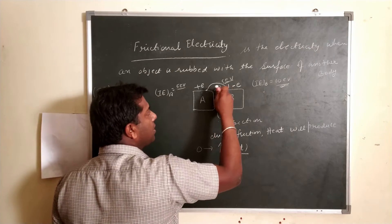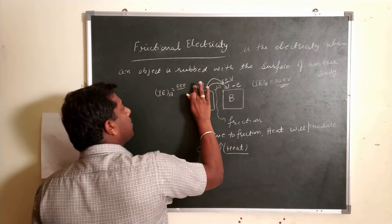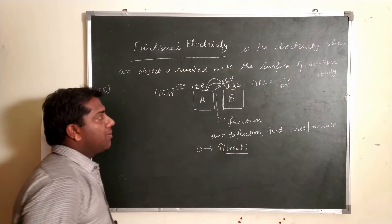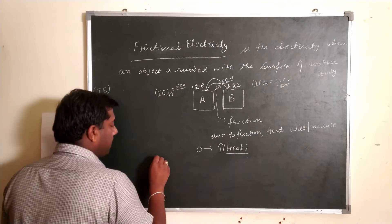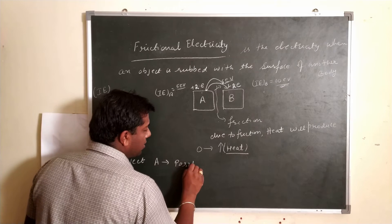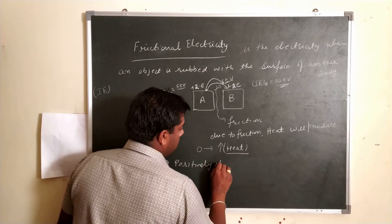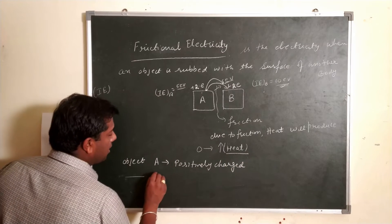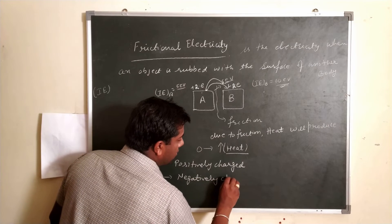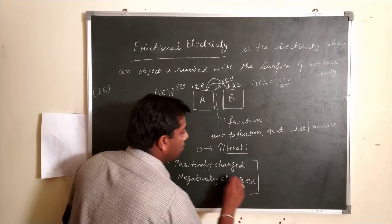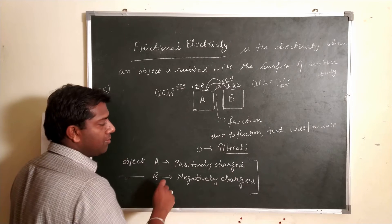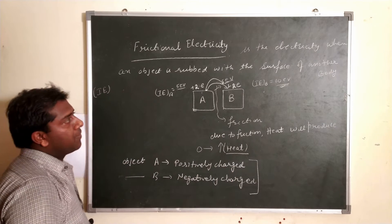As we continue rubbing, more heat is produced, and another electron transfers. So the charge on A becomes +2e and on B becomes -2e. In this way the charge keeps increasing. Thus object A becomes positively charged and object B becomes negatively charged. This is how we can take two neutral objects and make one positively charged and the other negatively charged.